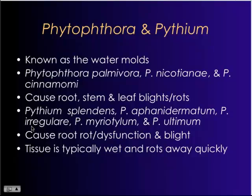Another closely related pathogen, Pythium, is also a big problem — primarily a root rot problem. The most common species is Pythium splendens. Pythium aphanidermatum is somewhat unique in that it will actually affect the canopy and can look a lot like Phytophthora, starting as a root rot and then moving up into the foliage. There are a couple of other Pythium species we see quite frequently as well.